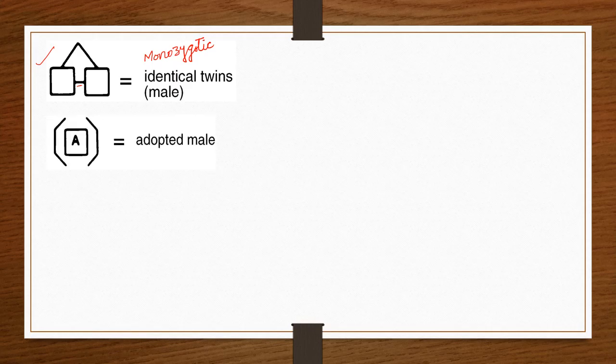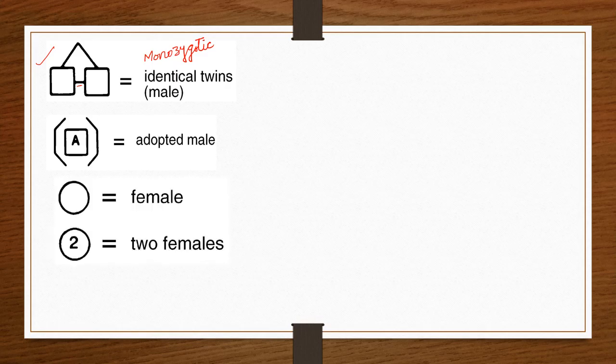Adopted individuals — those not born to their listed parents but adopted from other parents — are represented with a specific symbol in the pedigree chart. This completes the male symbols; let us now move to the female symbols.